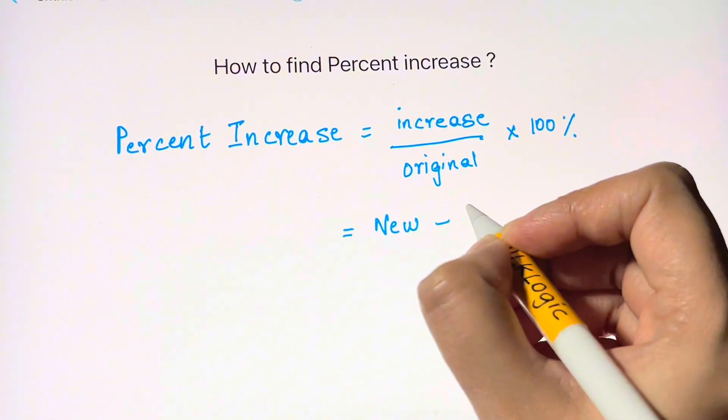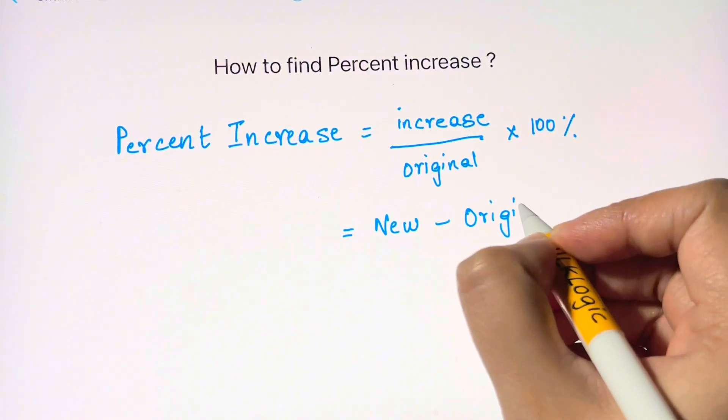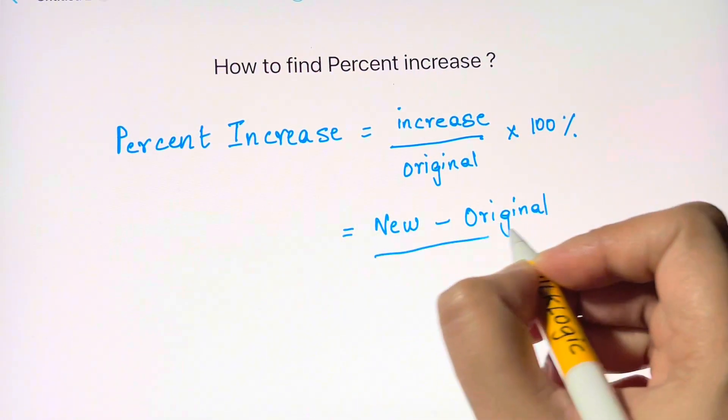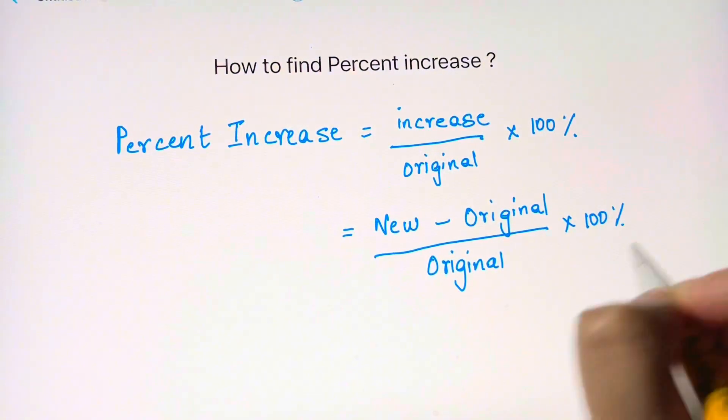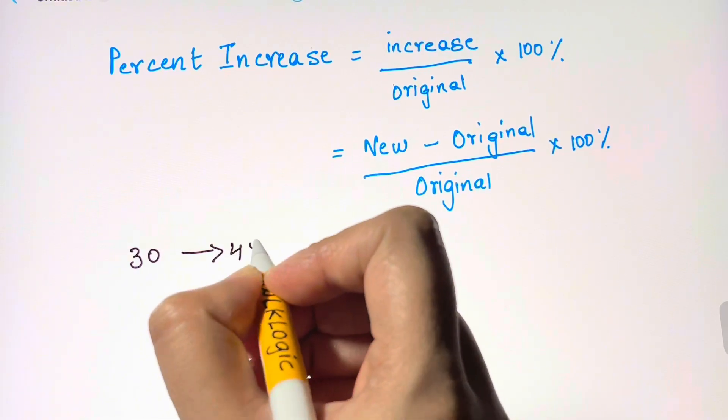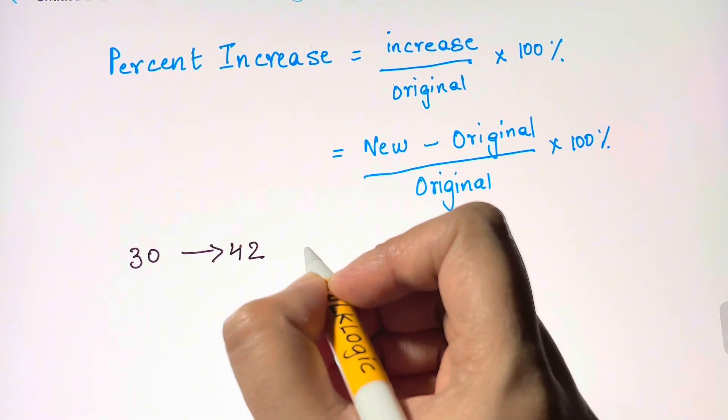That is new value minus the original value divided by the original value and multiply the answer by hundred. See if we have an increase from 30 to 42, 42 is our new value and 30 is our original value.